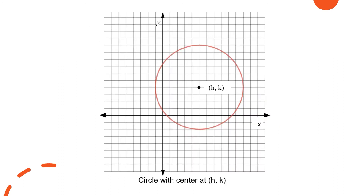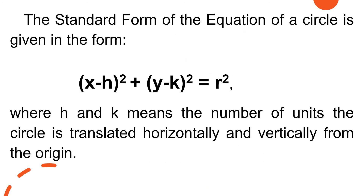Now what if the center is not at the origin? If the center of the given circle is at point (h, k), the standard form is (x − h)² + (y − k)² = r², where h and k represent the number of units the circle is translated horizontally and vertically from the origin. So (h, k) are the coordinates of the center.